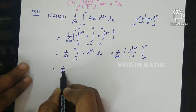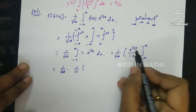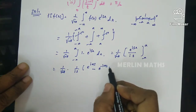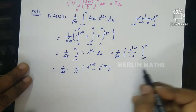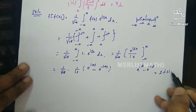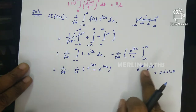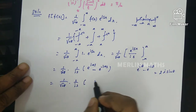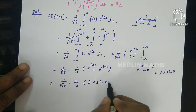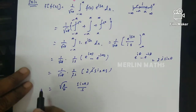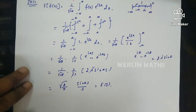So we get (1/√(2π)) · (1/is) · [e^(ias) - e^(-ias)]. Using the result e^(iθ) - e^(-iθ) = 2i sin θ, with θ = as, this becomes (1/√(2π)) · (1/is) · 2i sin(as). Cancelling i, this simplifies to √(2/π) · sin(as)/s. This is our Fourier transform F(s) — the first part of the problem.